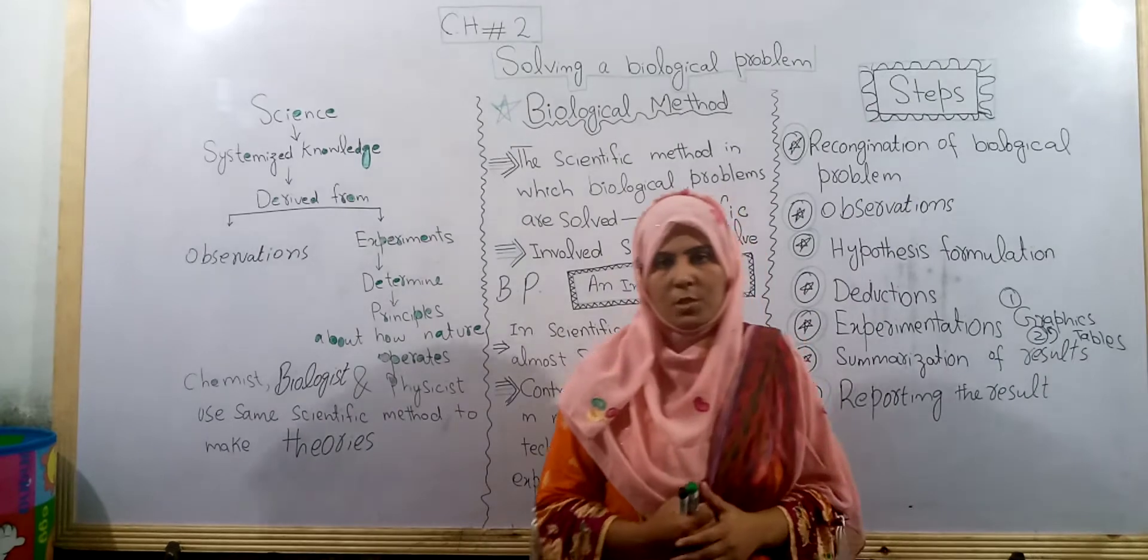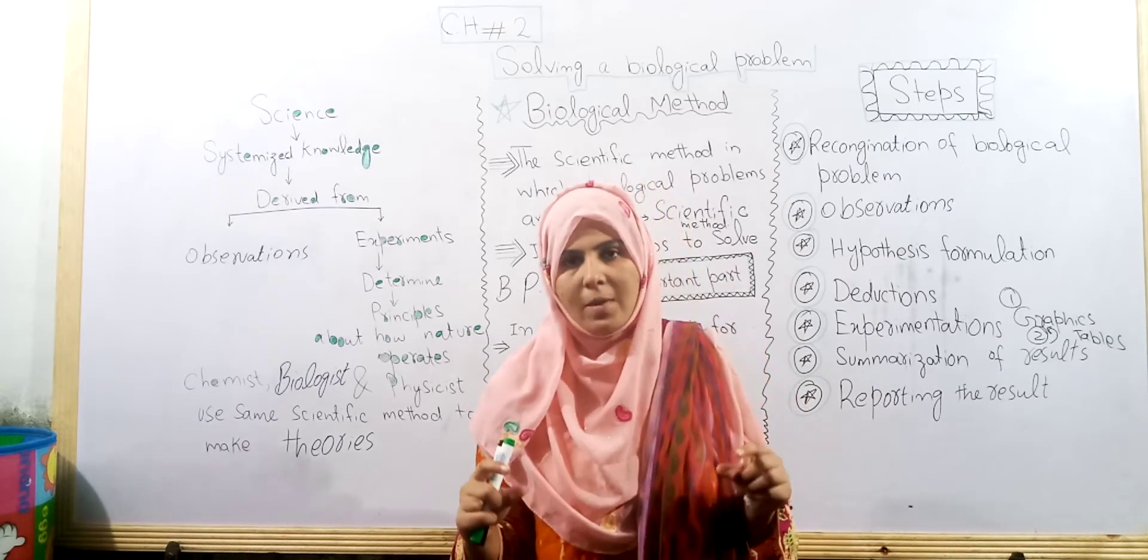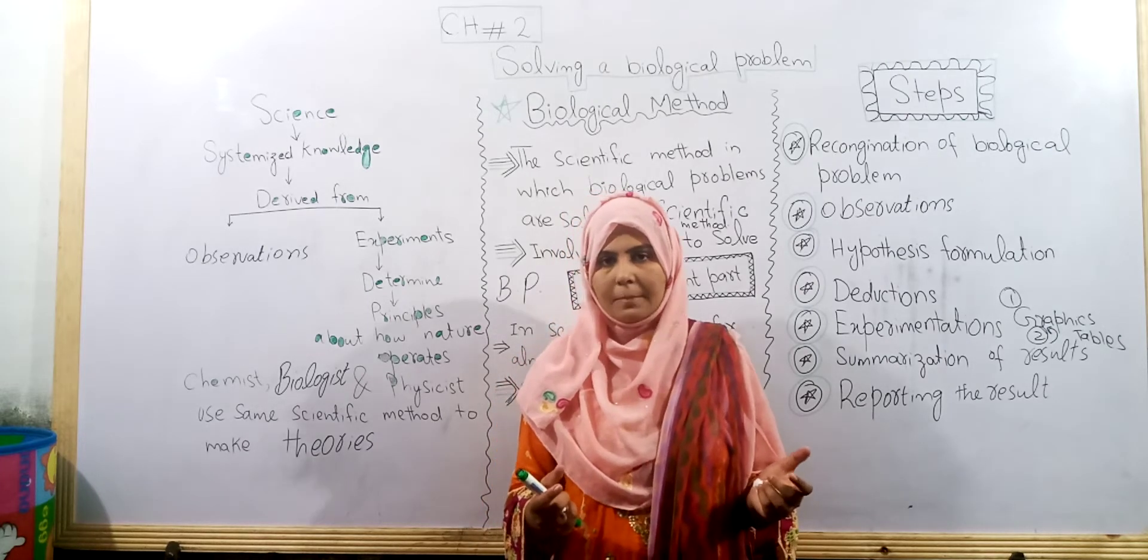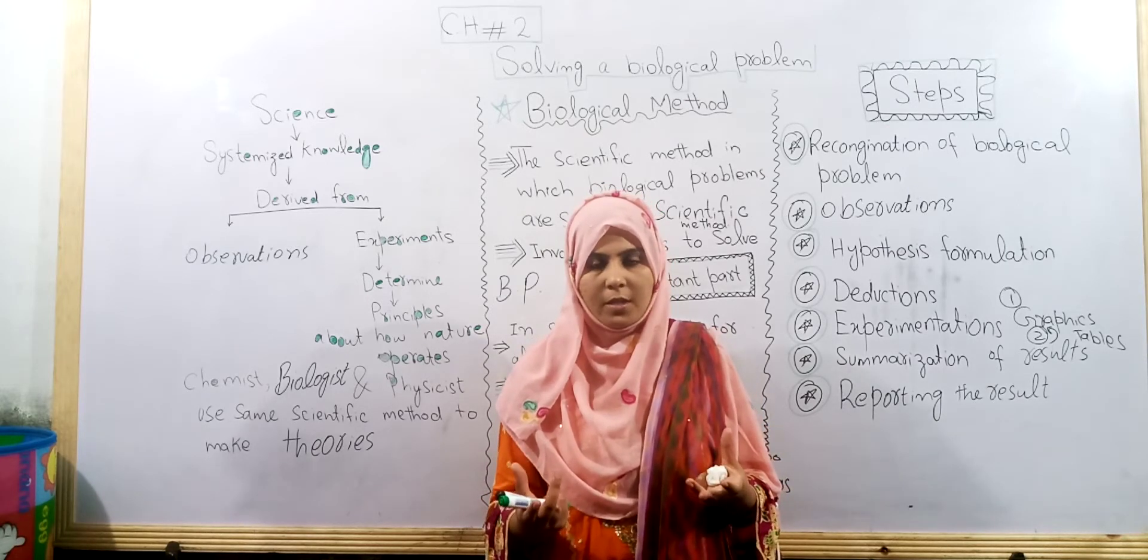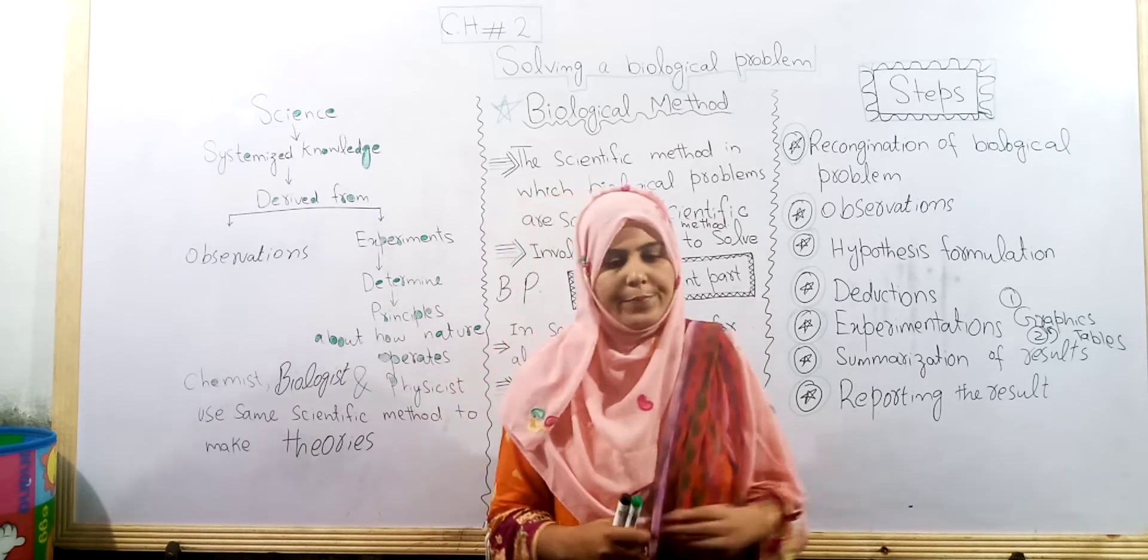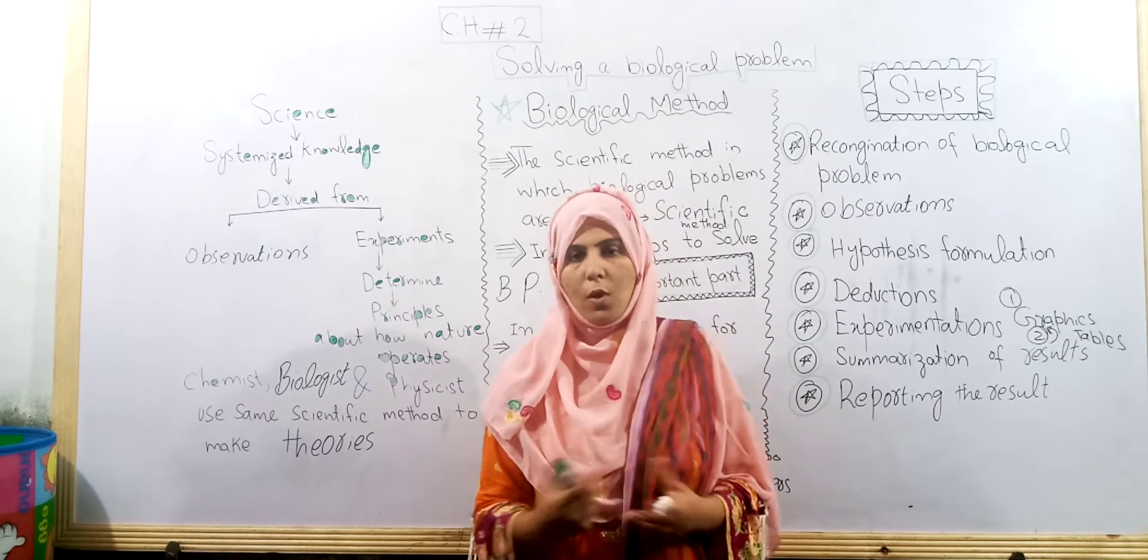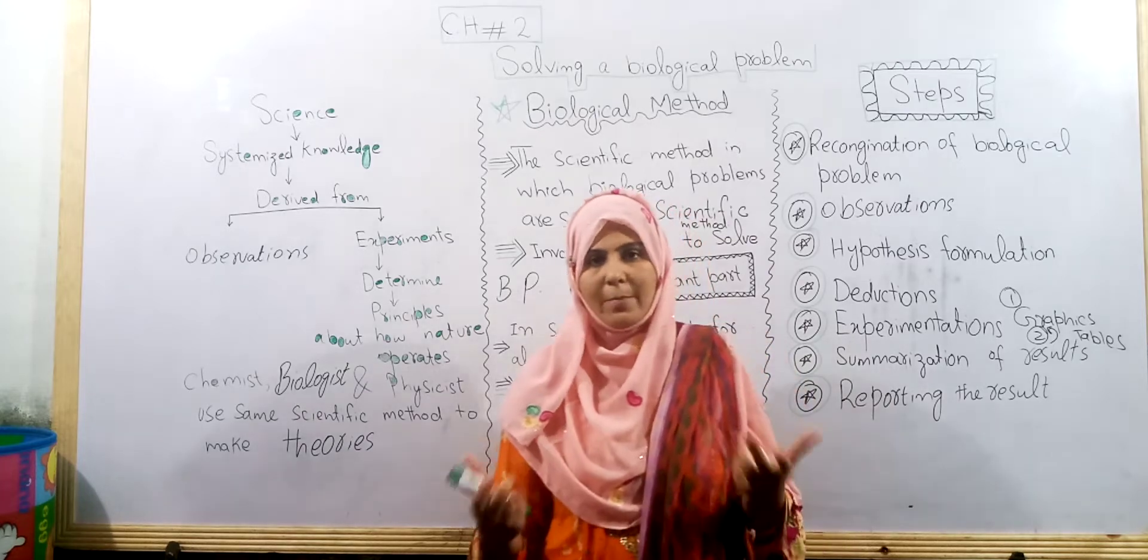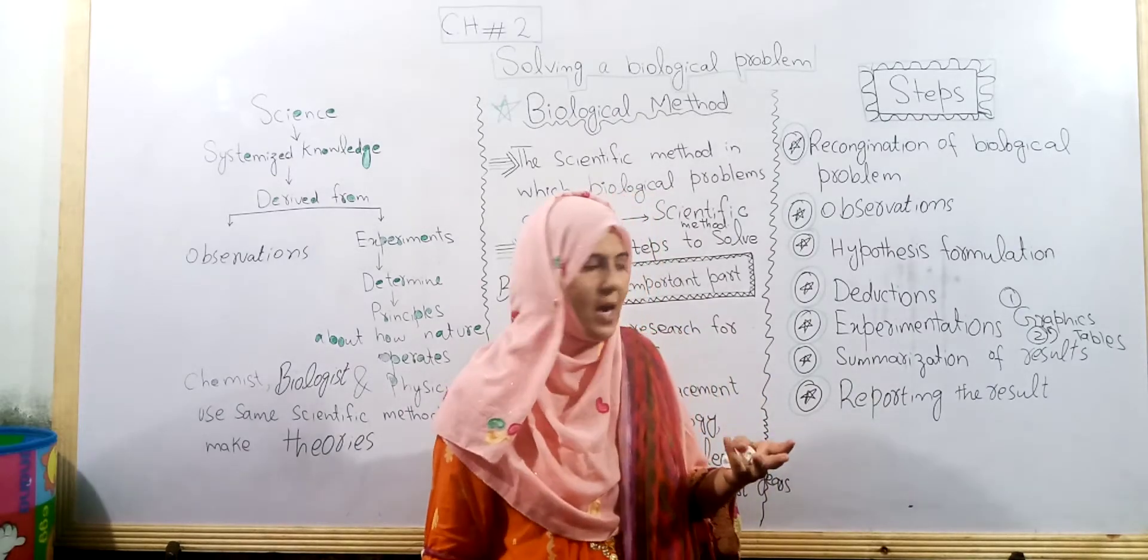Next, hypothesis formulation. We make a statement. For example, we make a statement. This is called soft drinks and wheat, and if there is over usage then it will be adapted. For example, we have made heart disease. Next, we have done deductions and we have modified heart disease. Next, we have done experiments.